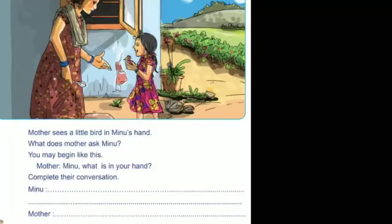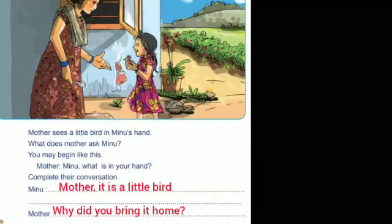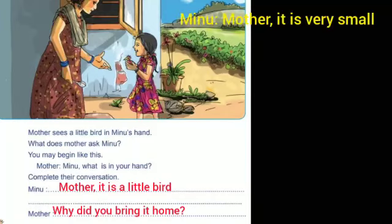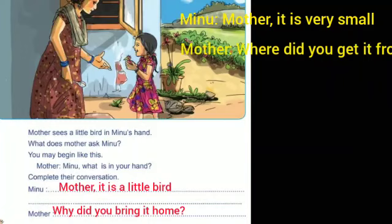Minu says: 'Yes mother, it is a little bird.' Then the mother says: 'Why did you bring it home?' Minu says: 'Mother, it is very small.' Mother asks: 'Where did you get it from?' Minu replies: 'From the playground.' You can complete the conversation and add two more lines.